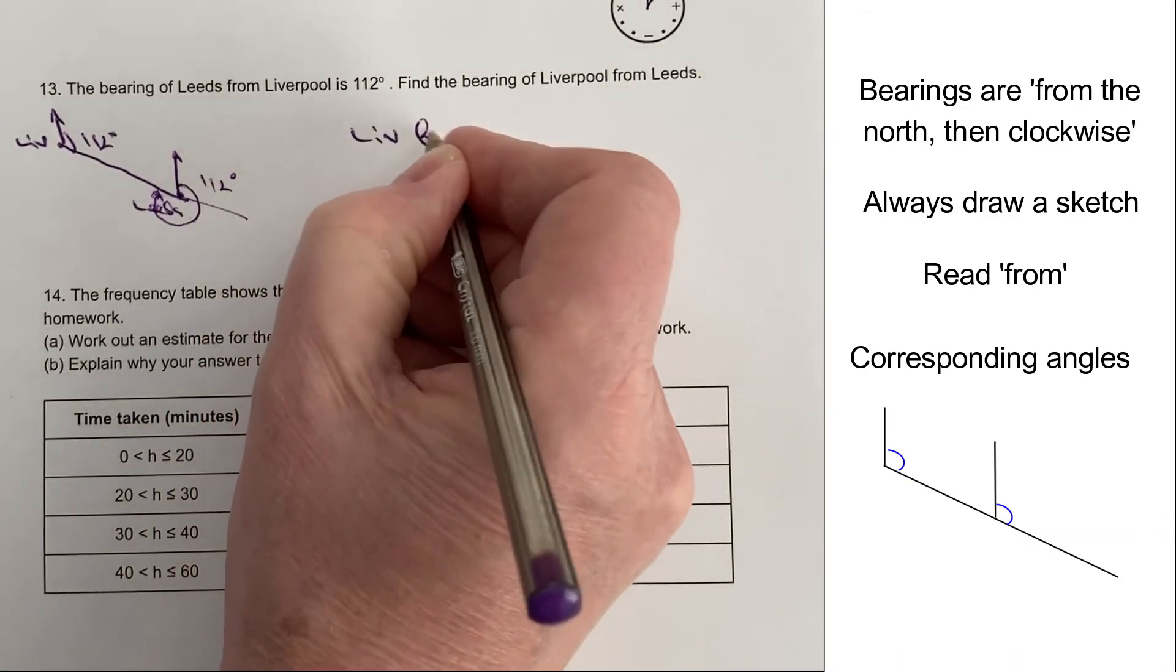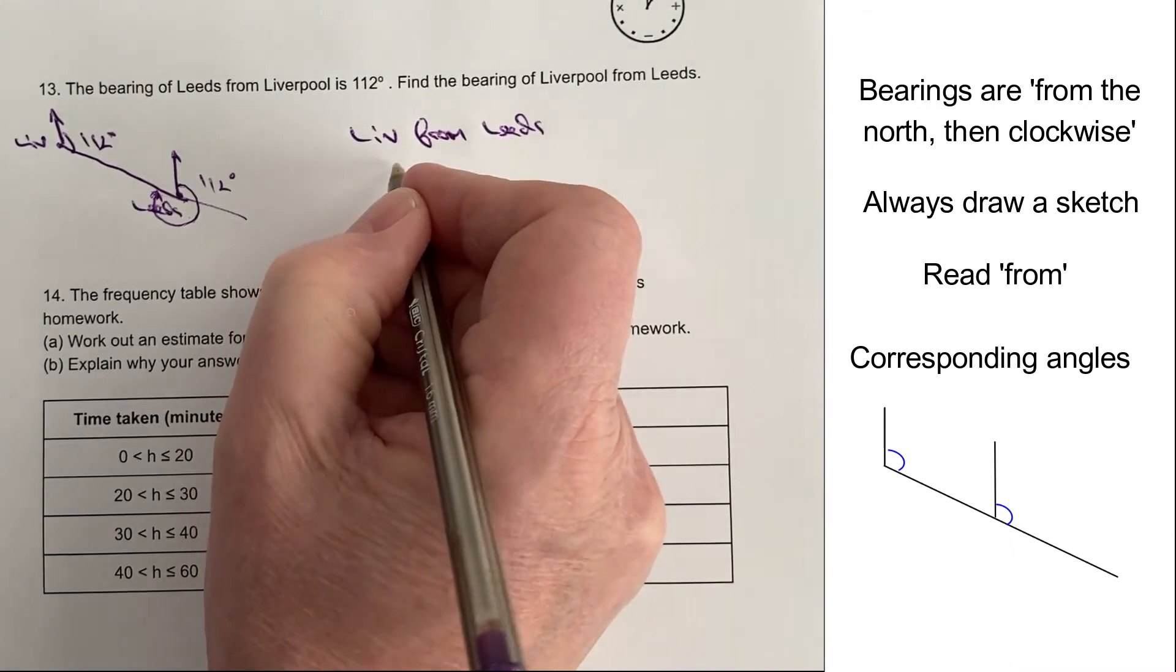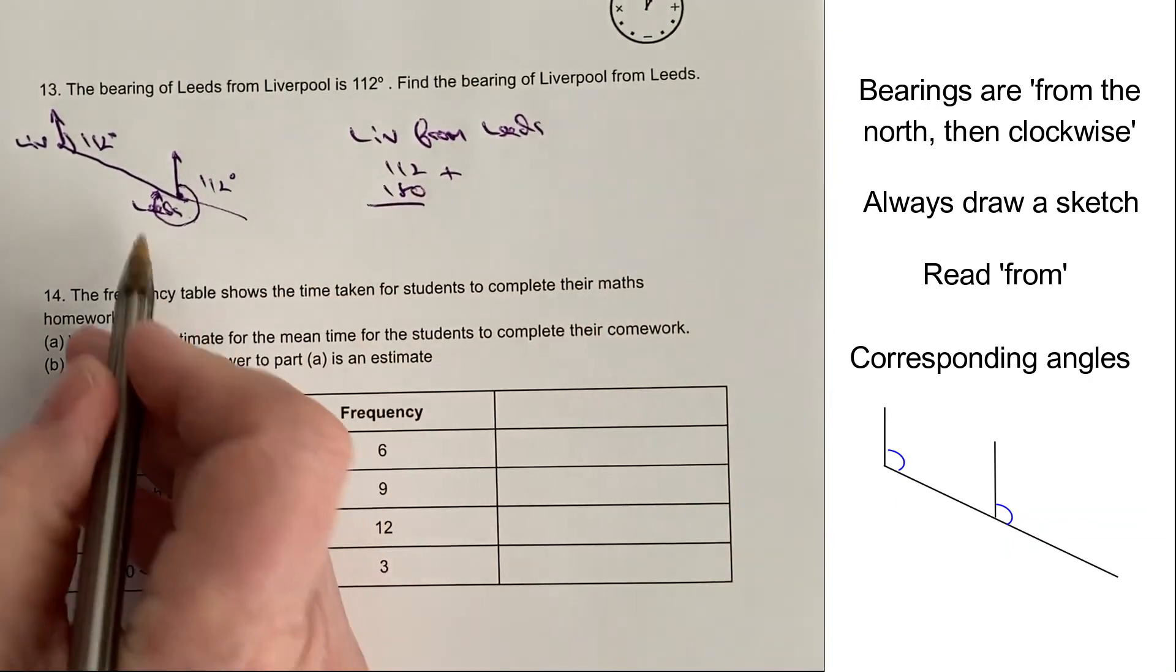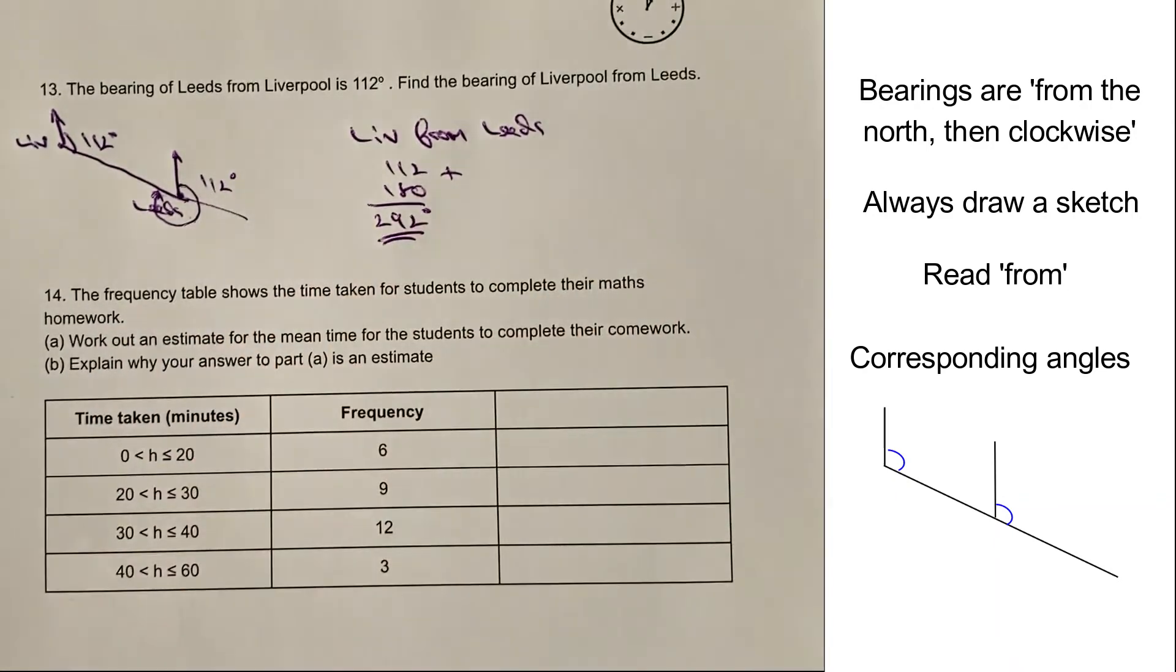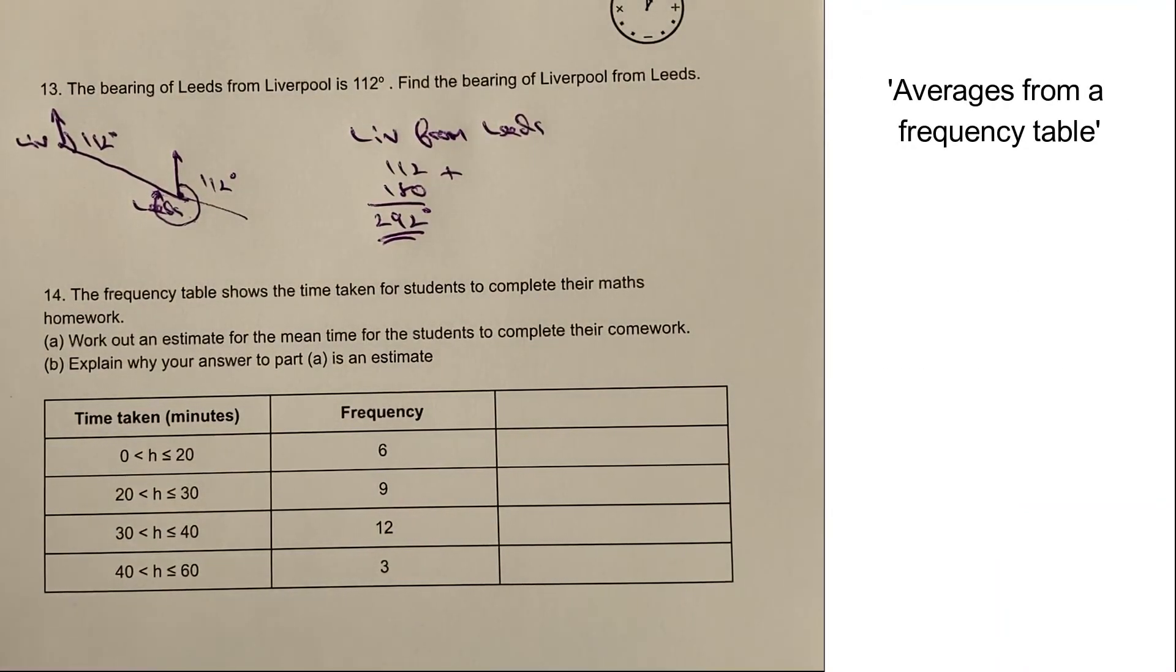So therefore, Liverpool from Leeds is going to be a total bearing of 112 plus 180, which is the straight line at the bottom, and that's going to give you 292 degrees, which would be the answer to the question. Let's move on to the final bit.